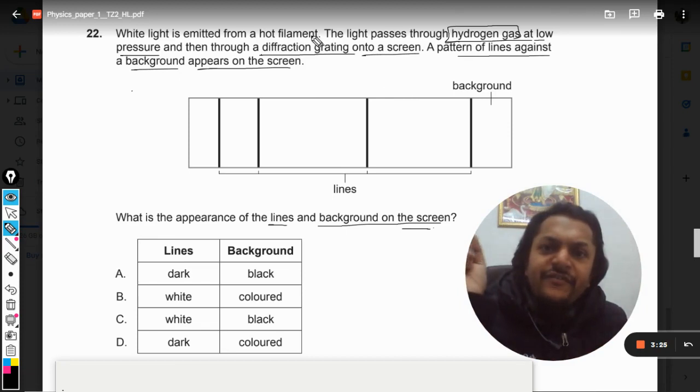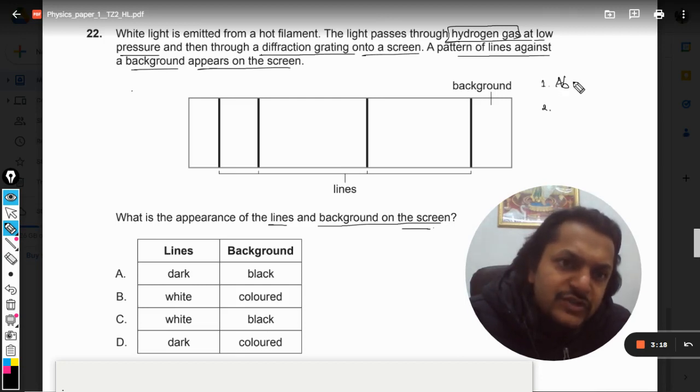There is a spectrum that we would be getting out of this diffraction grating. There are two kinds of spectrums that we get. Number one is absorption spectrum, and number two is emission spectrum.